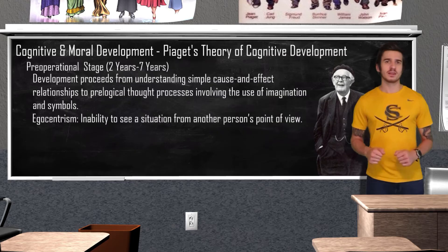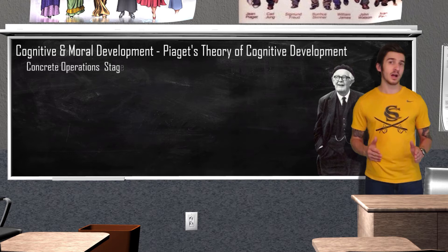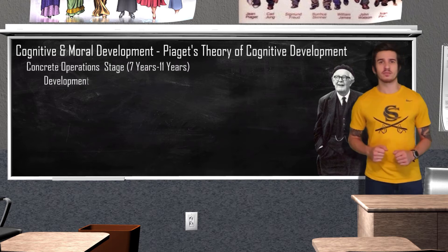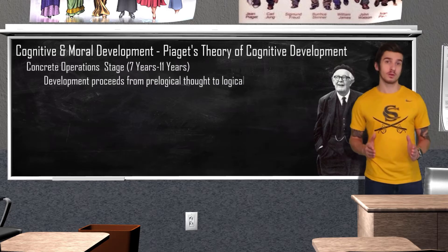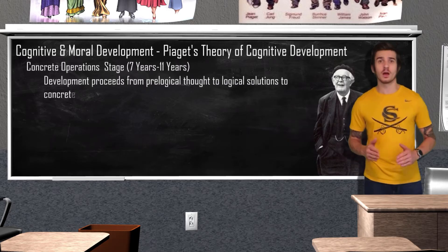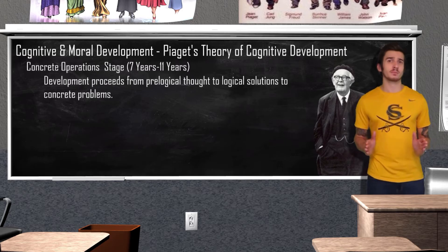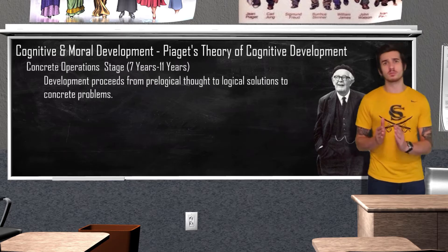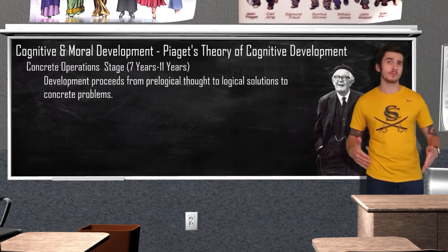Piaget found that at the pre-operational stage children could not solve conservation problems. Ages seven to eleven bring us to concrete operations, where we now have the cognitive ability to solve conservation problems and have developed logical thought we can apply to concrete problems. At this stage the child starts to understand reversibility — for example, understanding that three plus two and two plus three both equal five.